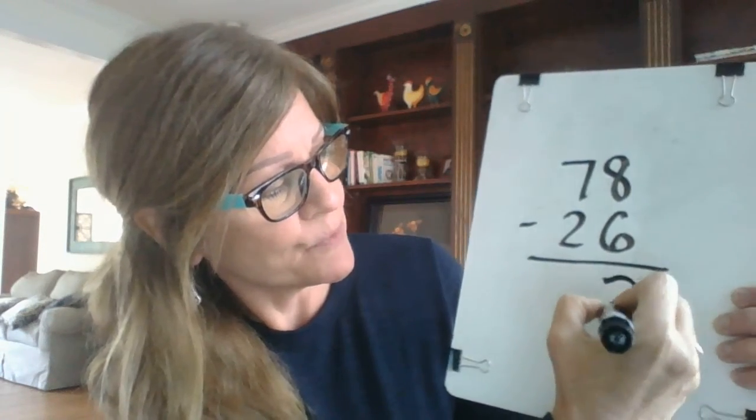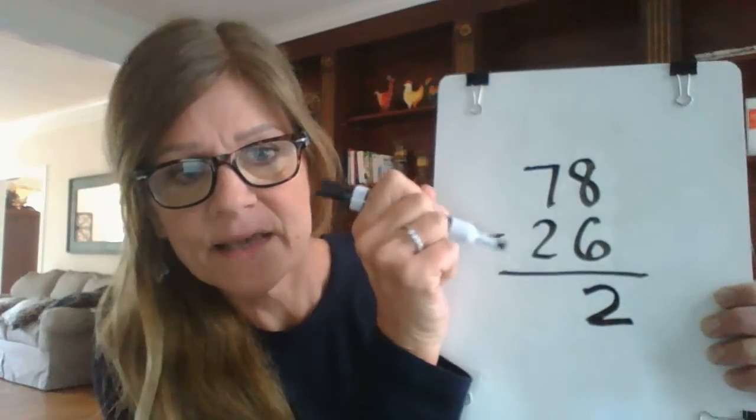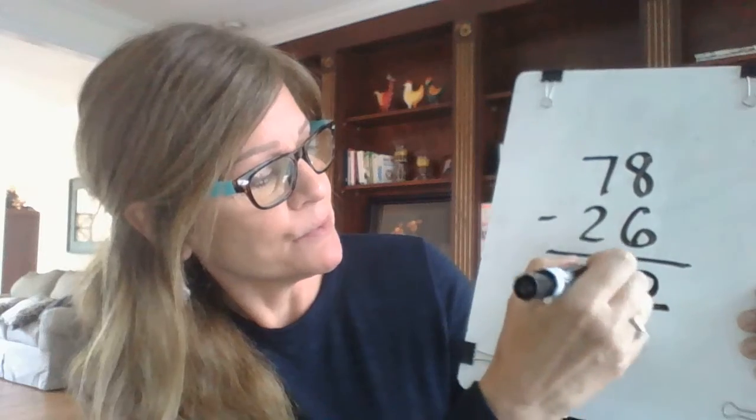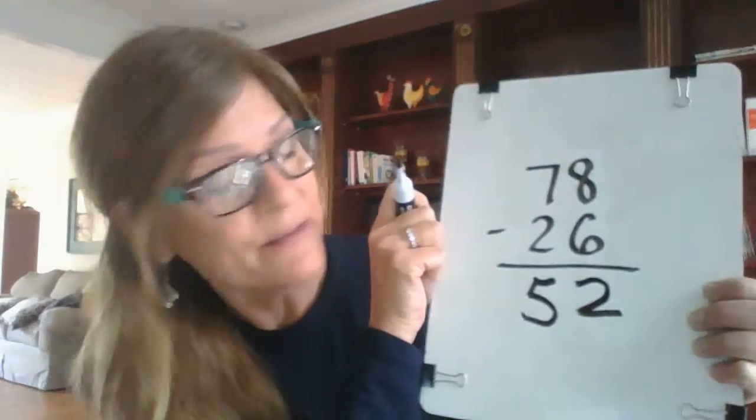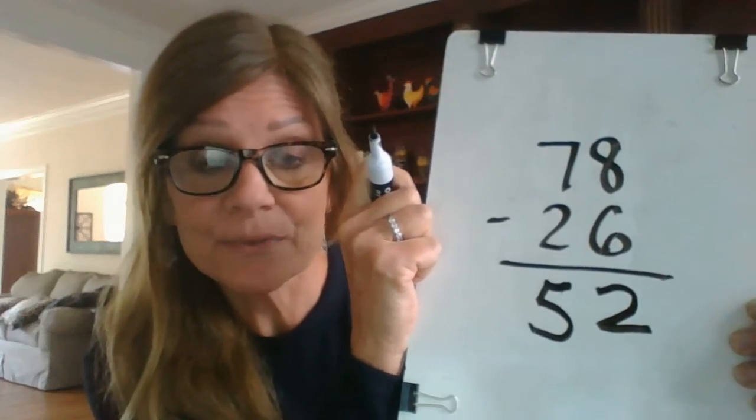So the 2 goes right here in the ones column. And then I go over to my tens column. And 7 minus 2 equals 5. 78 minus 26 equals 52. I did not need to regroup.